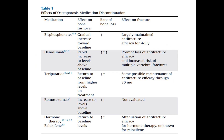After denosumab discontinuation there is a very rapid rate of bone loss, a prompt loss of anti-fracture efficacy, and an increased risk of multiple vertebral fractures. Therefore, whenever denosumab is discontinued it must be immediately followed with another form of therapy — usually bisphosphonates.